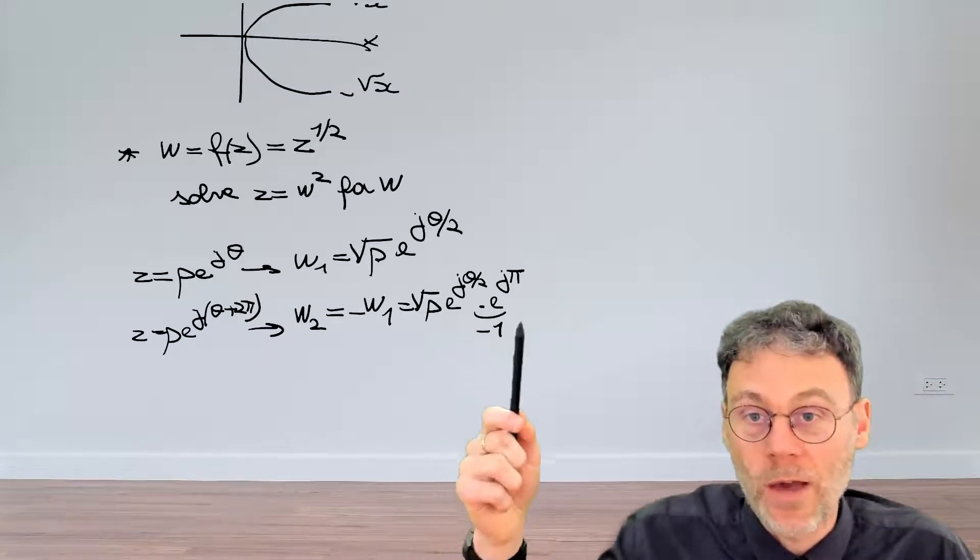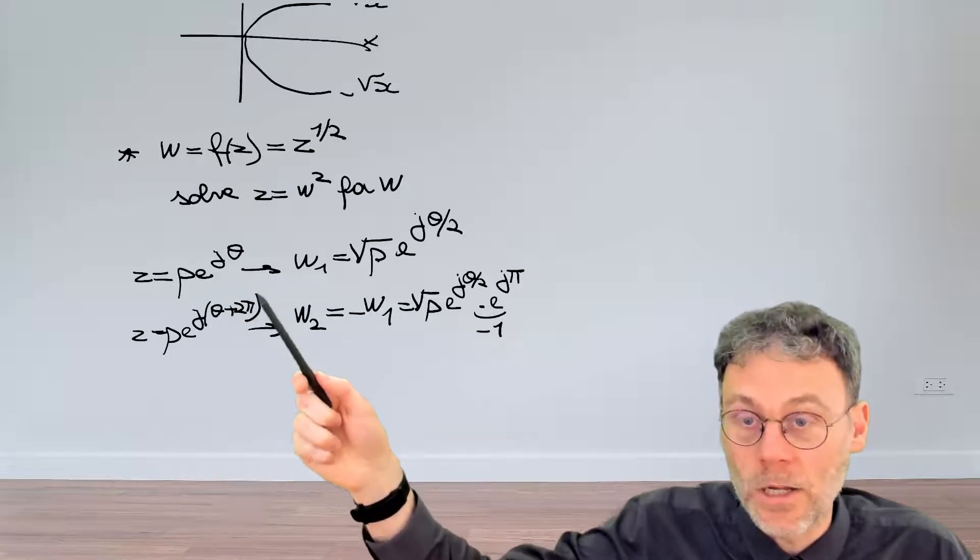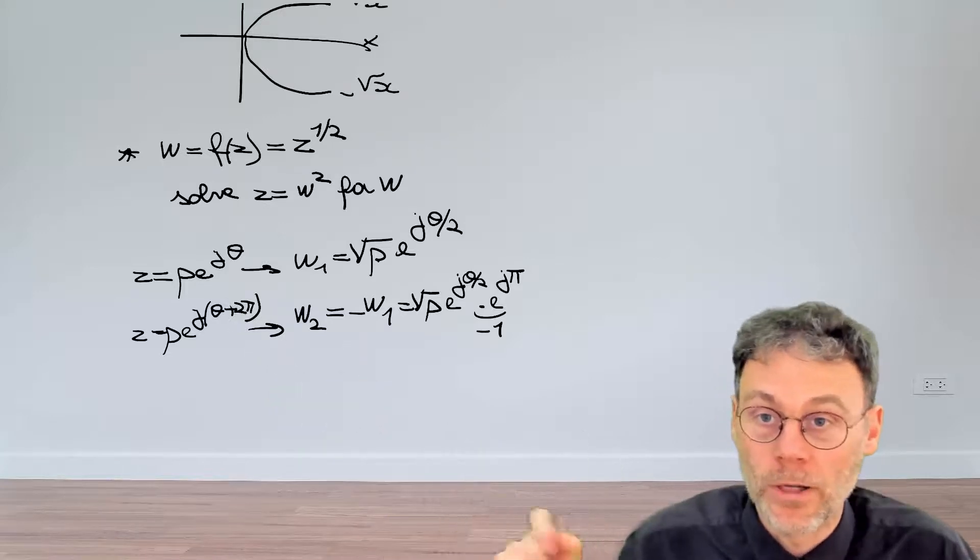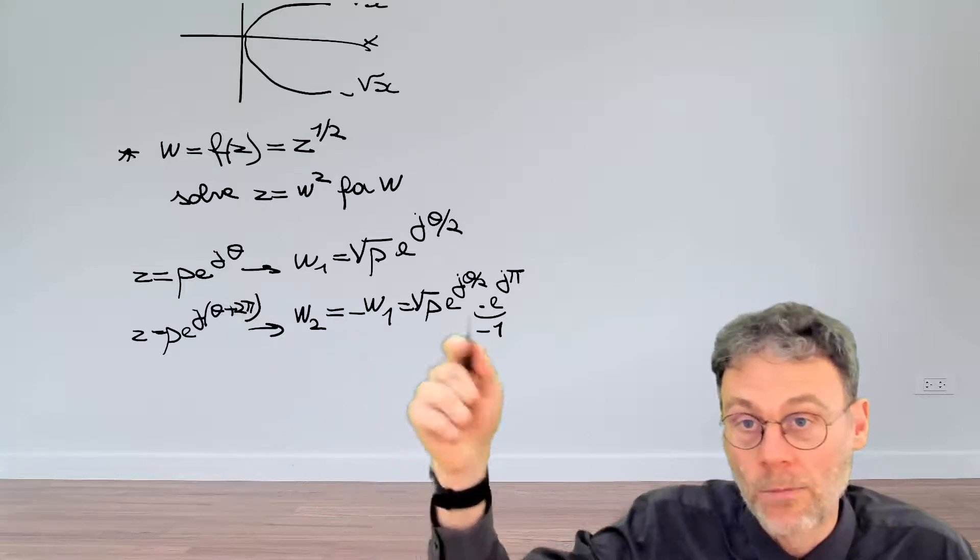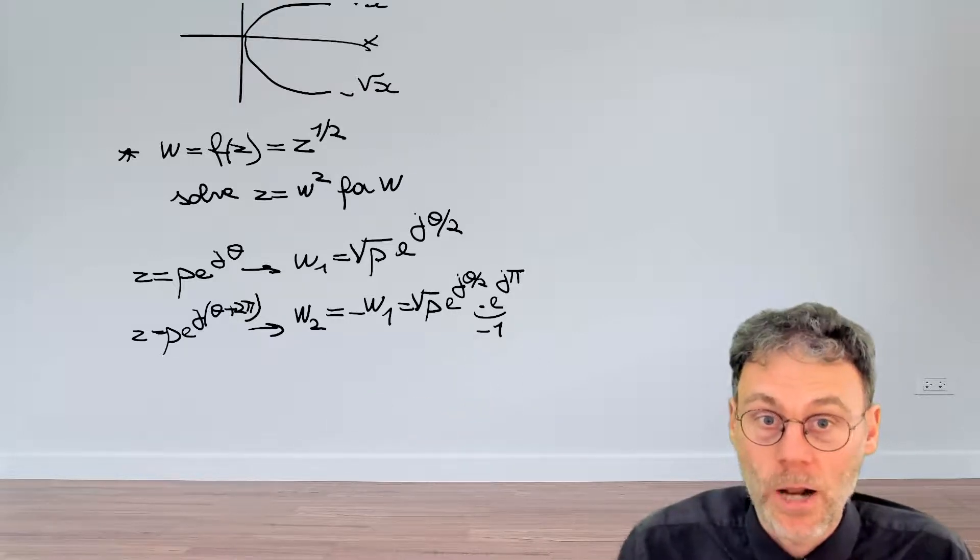So fundamentally, the reason why we have a second solution is because the angle is only defined up to an integer multiple of 2π. So if we just add 2π and blindly follow the rules, this second solution naturally rolls out of our calculations.